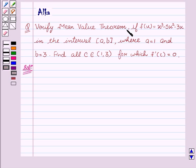Let us verify the Mean Value Theorem if f(x) = x³ - 5x² - 3x in the interval [a,b], where a = 1 and b = 3. Find all c ∈ (1,3) for which f'(c) = 0. So let us start with the solution.